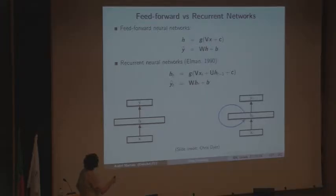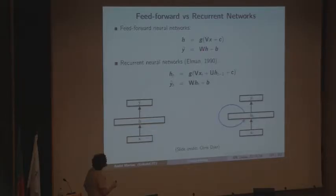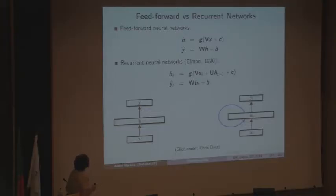Here's a recap of what feedforward neural networks are doing. For a simple regression case with a single hidden layer, we start with an input layer, use a weight matrix V and bias C to get pre-activation Vx+C, apply a nonlinear activation to obtain representation H, and then do an affine transformation on H to get prediction Y-hat. Recurrent neural networks do something a little different.